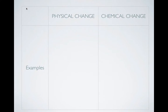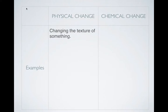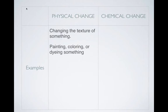How can you look at something and say, hey, I think that's a physical change or I think that's a chemical change? For physical changes, there are certain things that give you clues. This is not an extensive list, but it can give you a clue. The first thing you can look for is if you're changing the texture of something. If I take a piece of paper and crumple it up, the texture is different but it's still paper — so that's a physical change. Another thing: painting, coloring, or dyeing something.